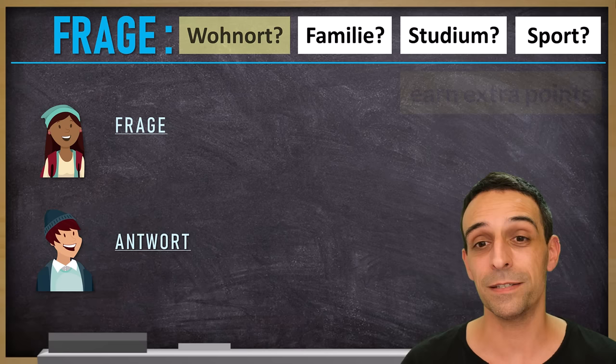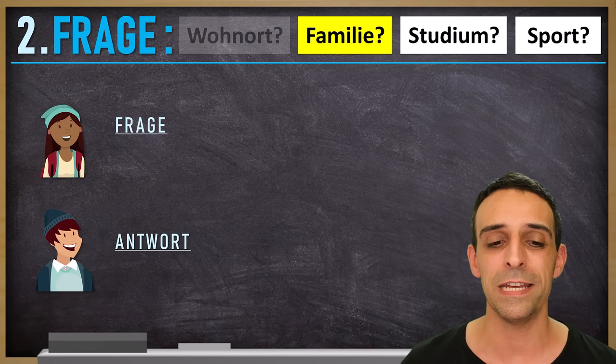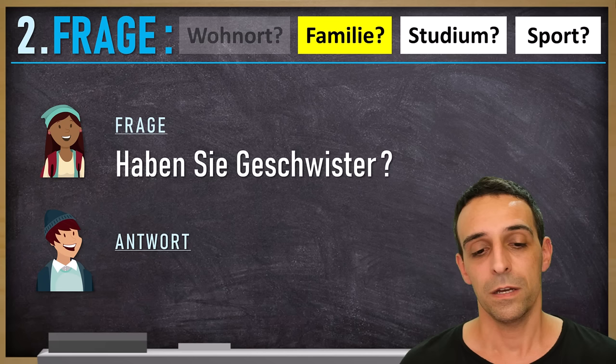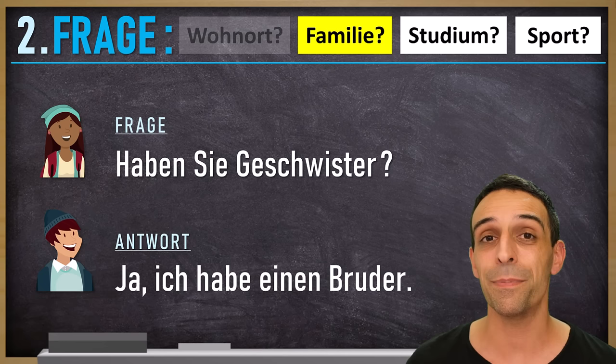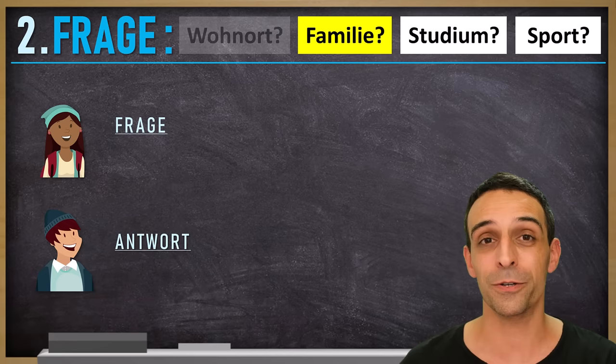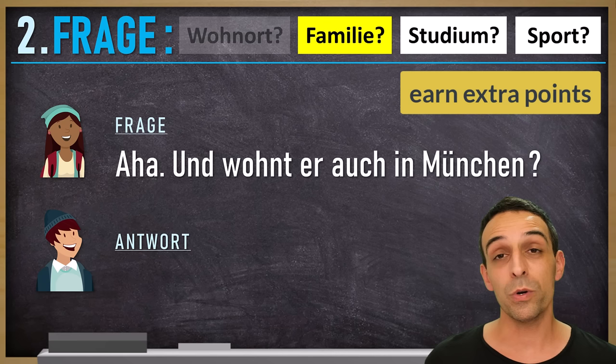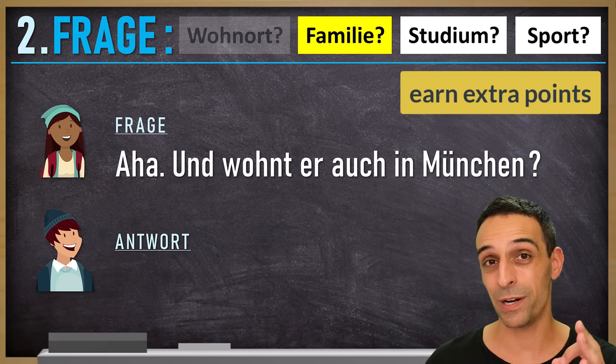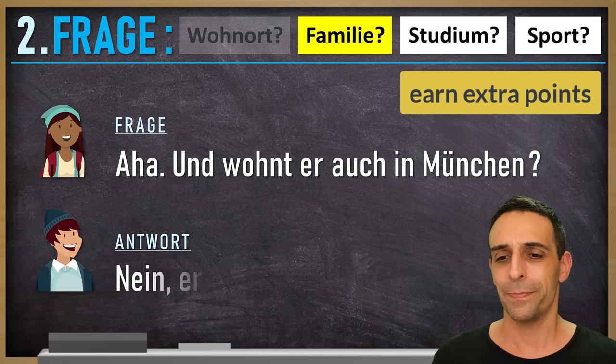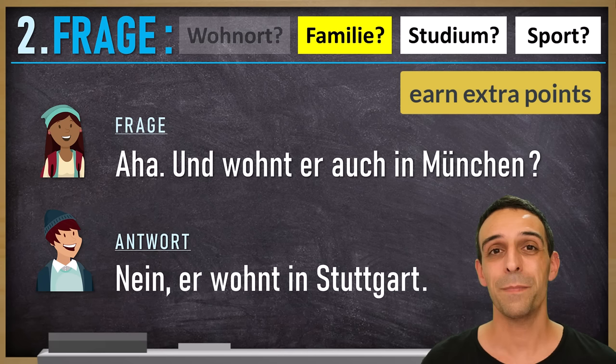For the second card I would choose Familie because it's easy. I ask: Haben Sie Geschwister? The answer: Ja, ich habe einen Bruder. Again, to show you're good at conversation, ask a second question: Und wohnt er auch in München? The answer: Nein, er wohnt in Stuttgart. That finishes the Familie card.